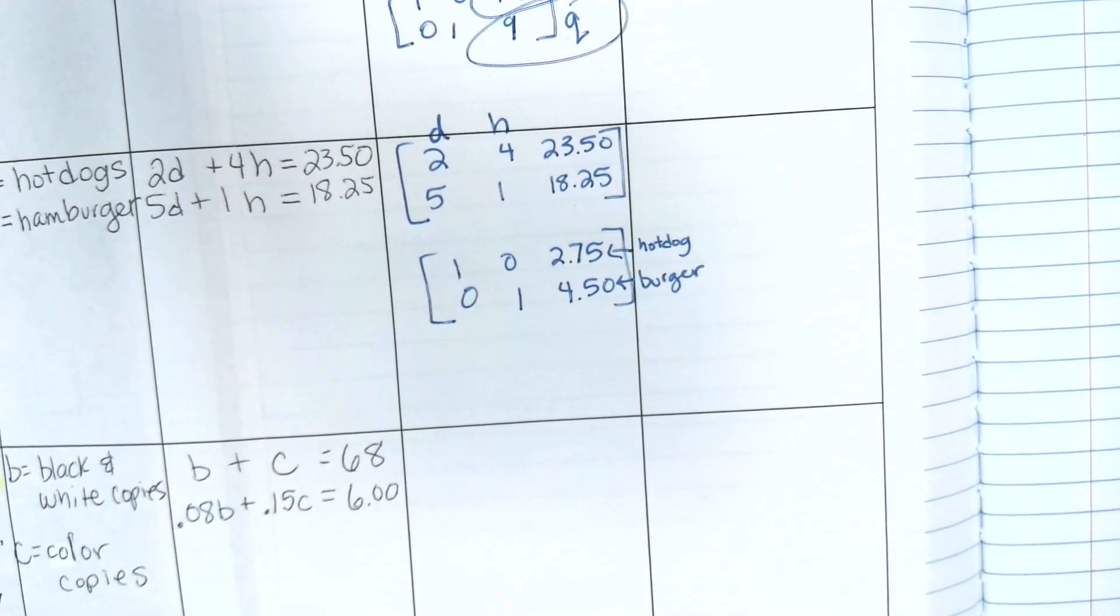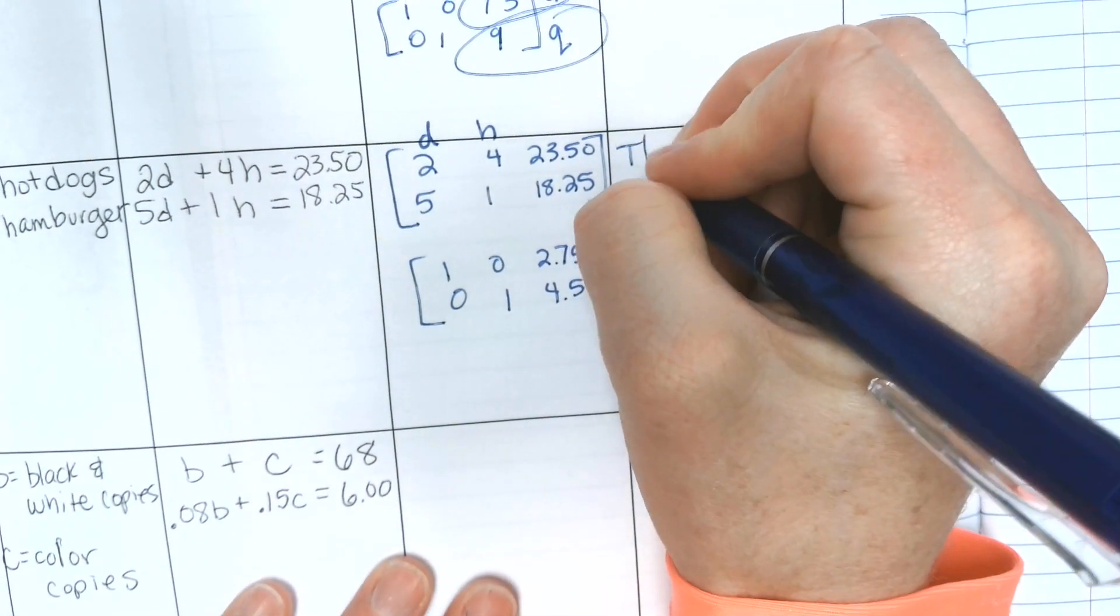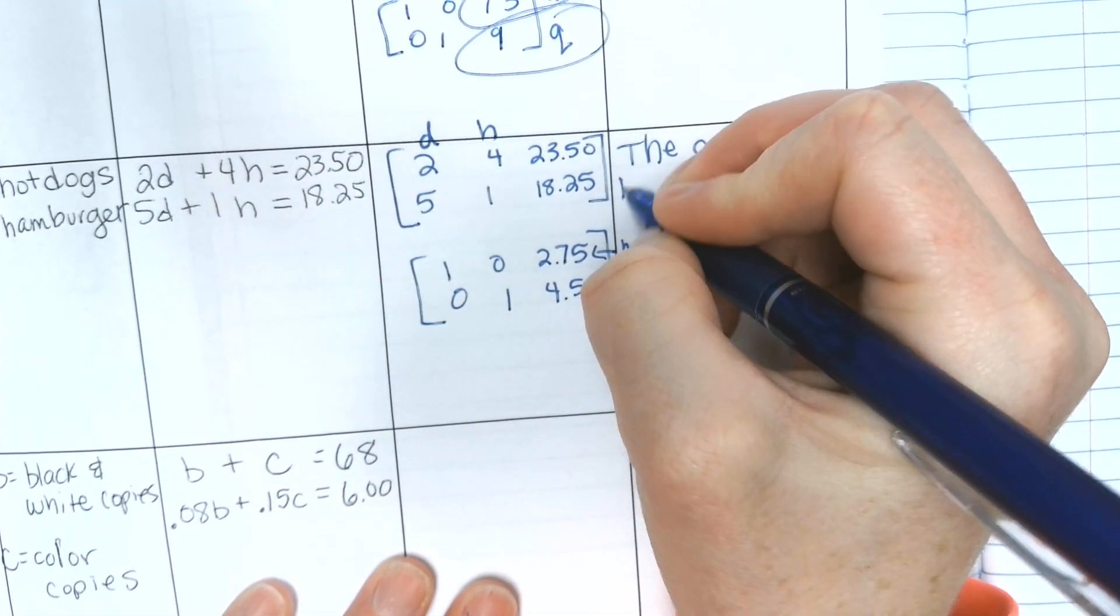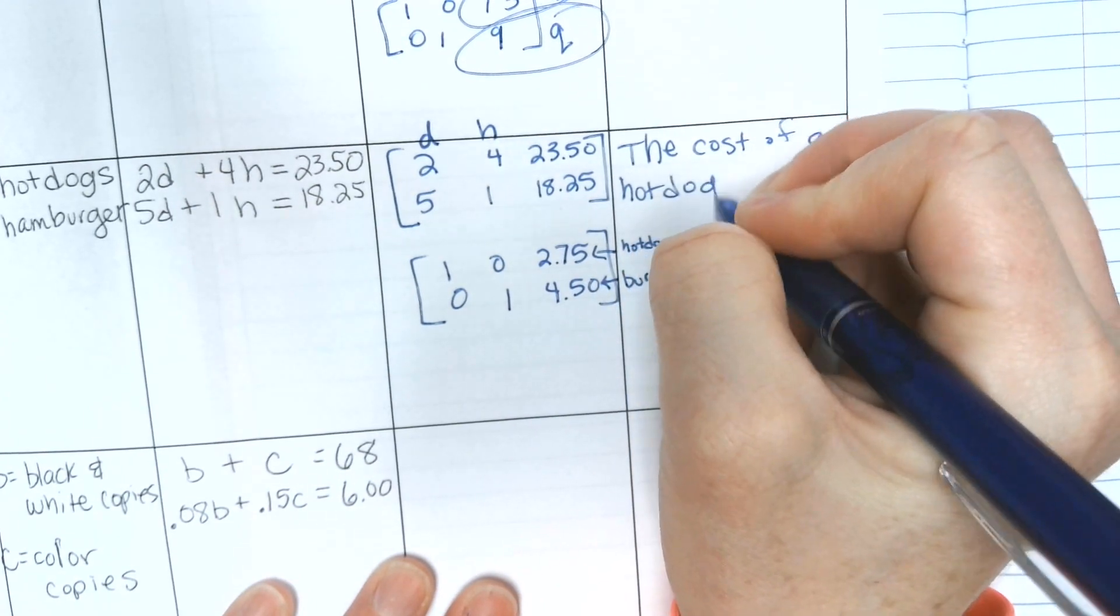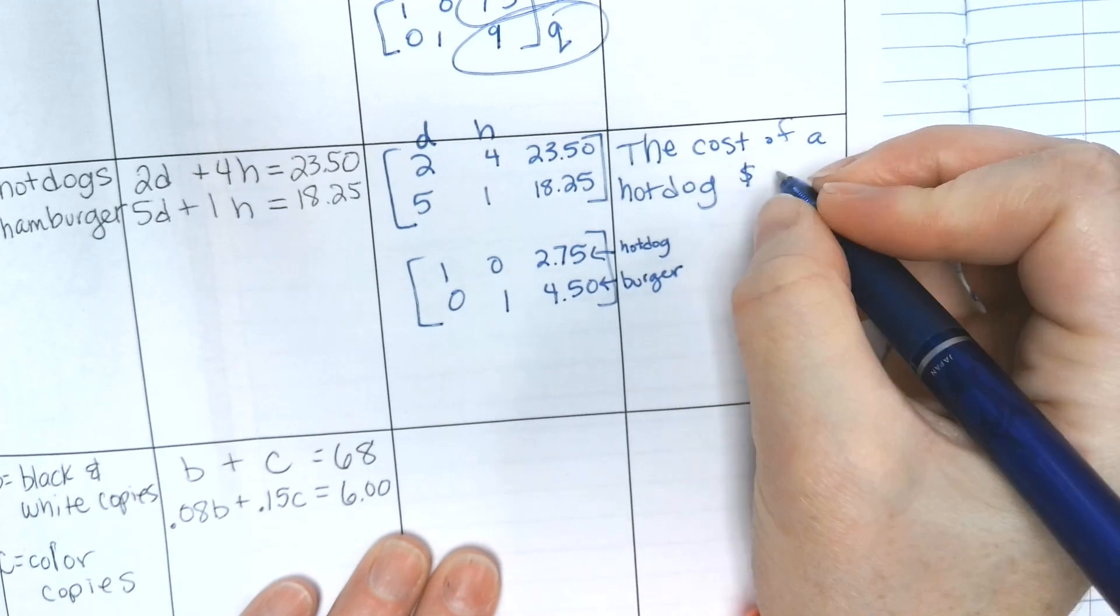So go ahead and write that as a sentence. The cost of a hot dog is this. We're not just going to write 275. We need to write the dollar sign.